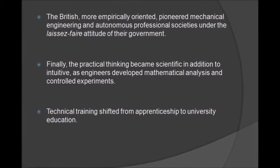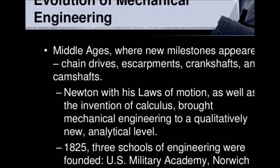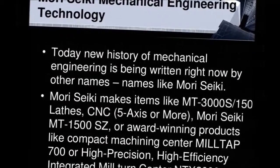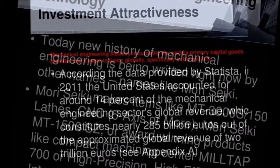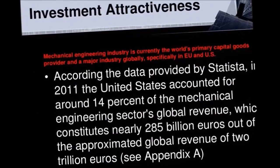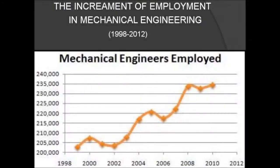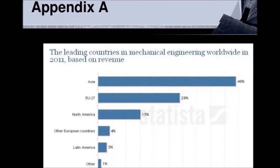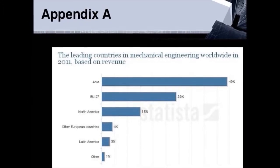The evolution of mechanical engineering in the Middle Ages includes Newton's laws of motion. Single mechanical engineering technologies developed with five axes. That was the increment of employment in mechanical engineering between 1998 to 2012, and the leading countries in mechanical engineering worldwide in 2011 based on revenue.